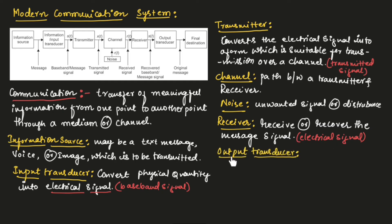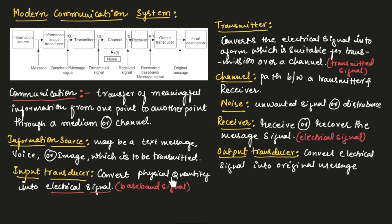Now let us understand the output transducer. The function of the output transducer is to convert the electrical signal into the original message. At the input transducer end, the original message or physical quantity was converted into an electrical signal; the output transducer reverses this by converting the received electrical signal back into the original message.